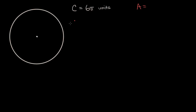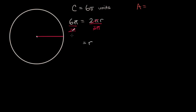So we know that circumference, which is six pi, so we know six pi is equal to two pi times our radius. And so what is the radius going to be? We're talking about that distance. We can divide both sides by two pi. If we divide both sides by two pi, to solve for r, what are we left with? We have r is equal to — pi divided by pi is just one, six divided by two is three. So we get that our radius, right over here, is equal to three units.